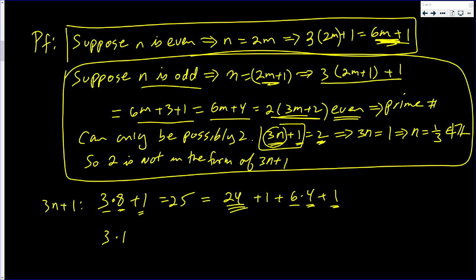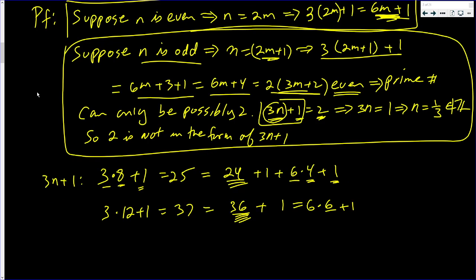If you have 3 times 12 plus 1, which is 37, that happens to be prime. Well, this should equal 36. This equals 36 plus 1. Yep. That's a multiple of 6. 6 times 6 plus 1.